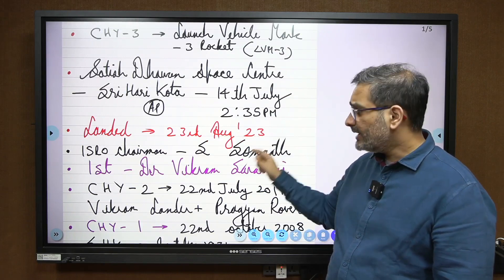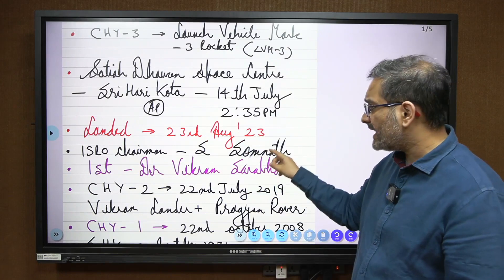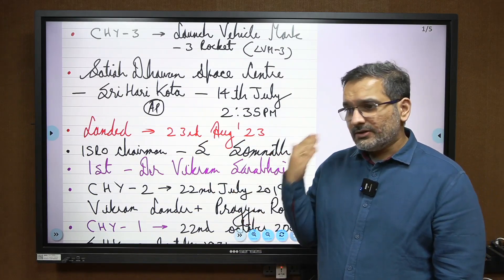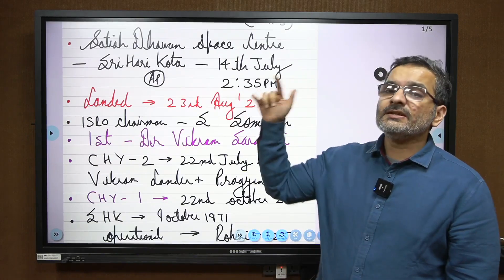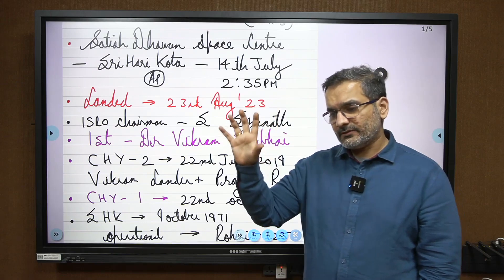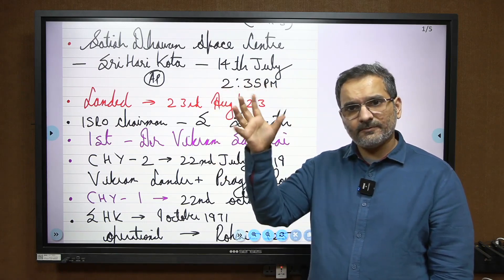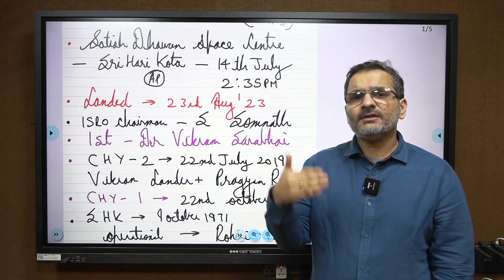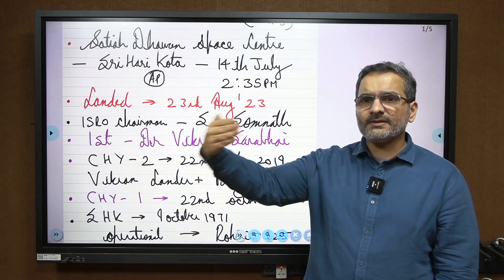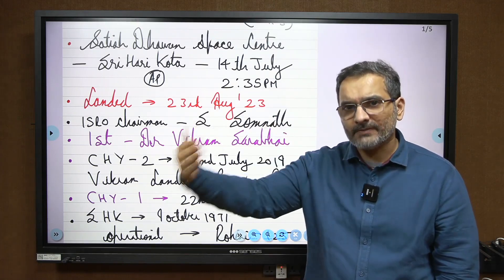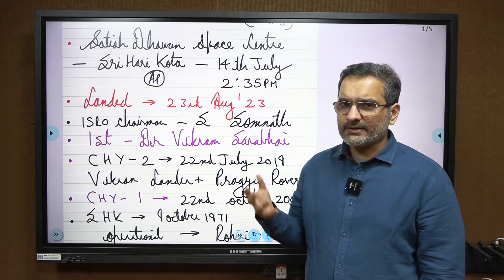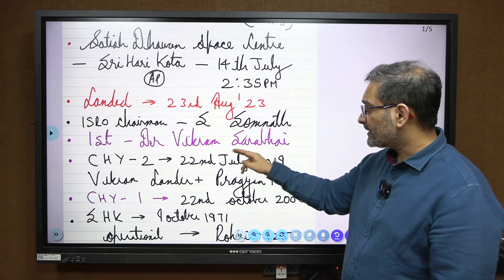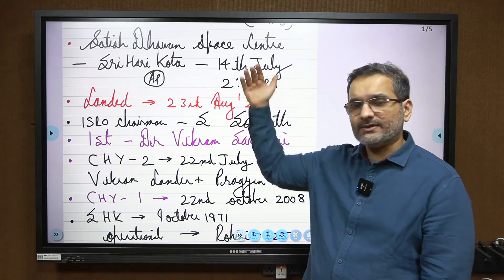It landed on the 23rd of August 2023. Both dates are important. The present ISRO chairman is S. Somnath. Please pause and take notes. The first ISRO chairman — CLAT usually gives a passage and asks ancillary static GK questions related to the topic. So the first ISRO chairman is Dr. Vikram Sarabhai. This is related static GK to the topic.